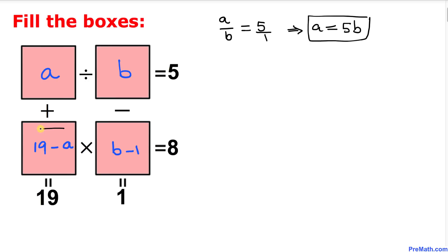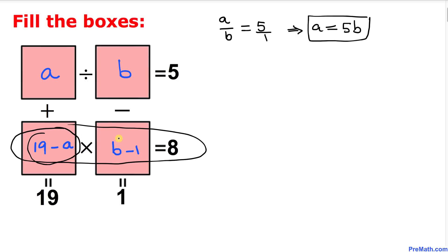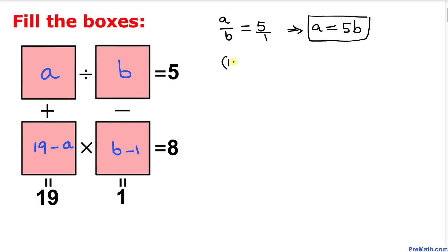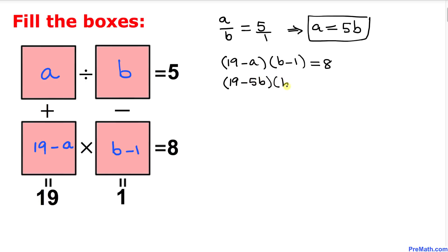Now let's focus on the other horizontal boxes: (19 minus a) times (b minus 1) equals 8. Since we know a equals 5b, we substitute to get (19 minus 5b) times (b minus 1) equals 8. Let's use the FOIL method and multiply them out.